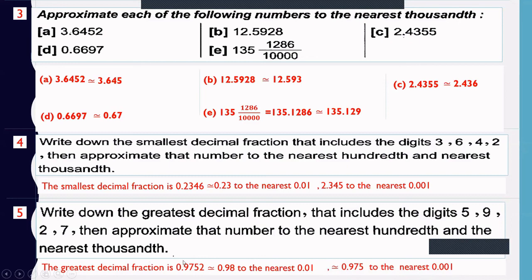To the nearest thousandths from 0.9752: the thousandths digit is 5. The next digit is 2, which is less than 5, so cancel the 2 — approximately 0.975. Bye.